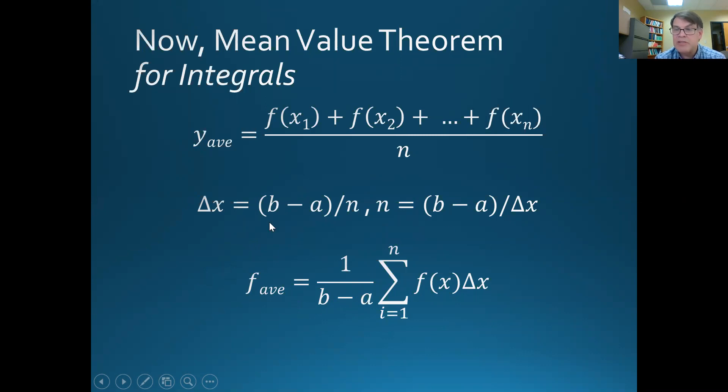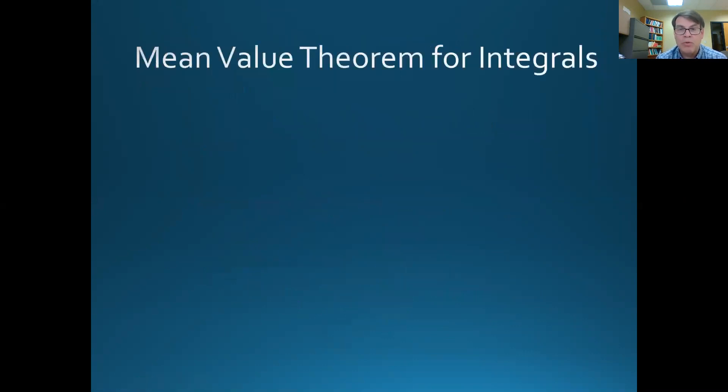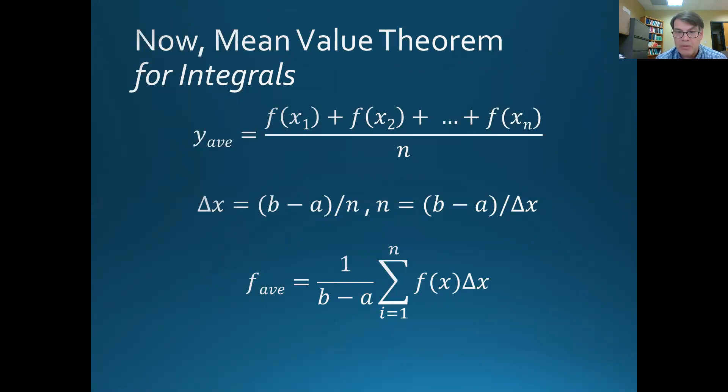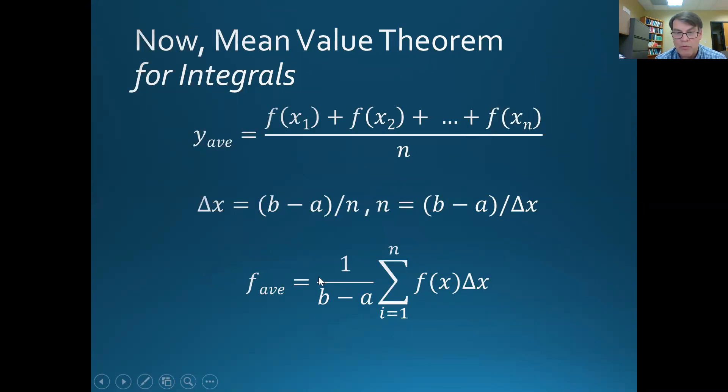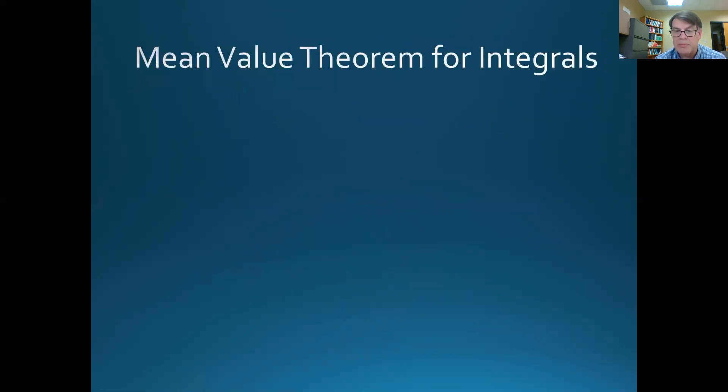Now, once we've gotten this far, the rest is easy, because we've been doing integral calculus now for a little while, right? And so here is the mean value theorem for integrals. The sum here becomes an integral from a to b. The 1 over b minus a, that's in front, right? This becomes the integral from a to b, and the delta x becomes dx. Ta-da! So there you have the mean value theorem.